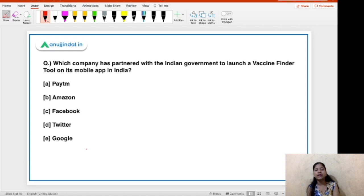Now we are moving on to the second question. Which company has partnered with Indian government to launch a Vaccine Finder tool on its mobile app in India? Paytm, Amazon, Facebook, Twitter, and Google are the options. Out of these five options, we have Facebook as our right answer. So, this Vaccine Finder tool will help the people to find the nearest location to get themselves vaccinated. Vaccine Finder, so it is very easy to understand.